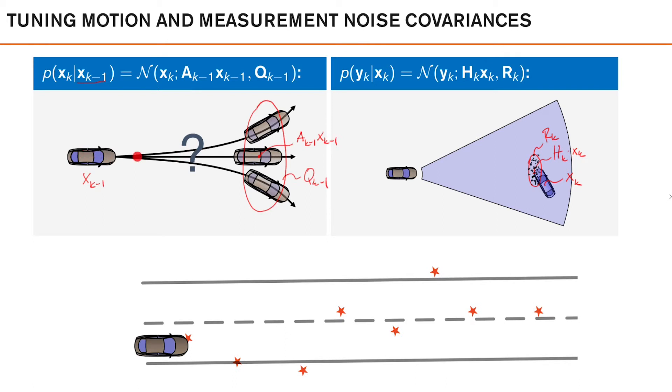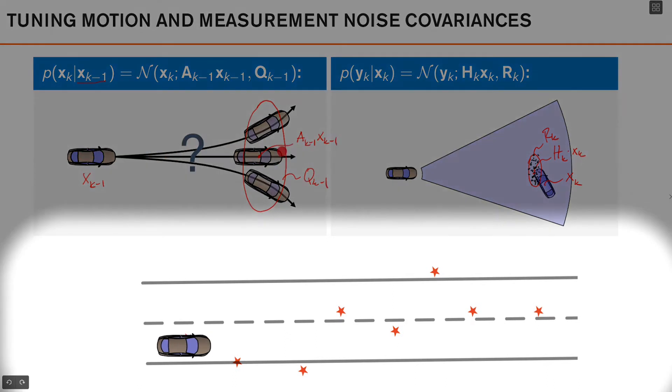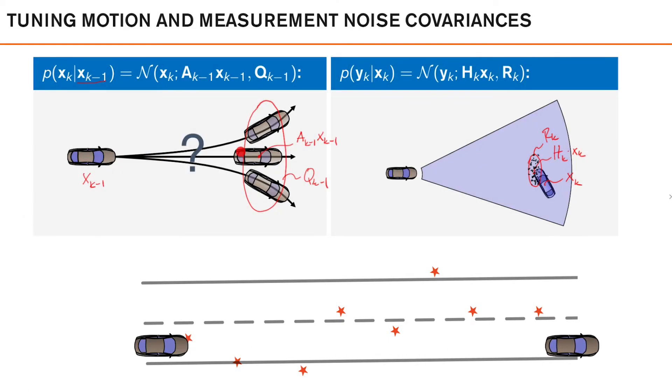And in this case, our deterministic prediction assumes that we are just going straight. As we see, the filter more or less ignores the observations as it believes them to be less reliable than our motion model.